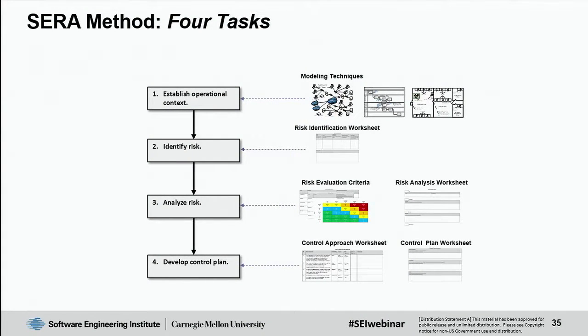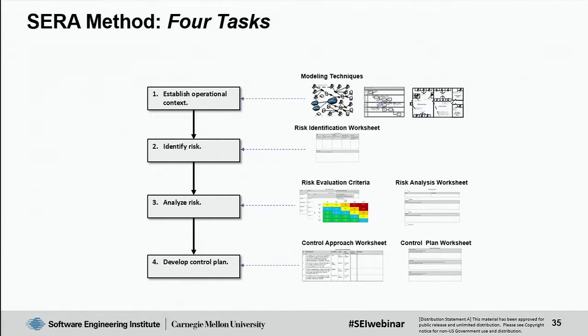One key aspect of doing these scenarios is to first understand how the system performs under normal circumstances — identifying what we call the baseline of operational performance. That's the first of four tasks defined in the SERA method. First we understand the operational context, then we identify the risk scenarios, analyze them, and develop control plans.